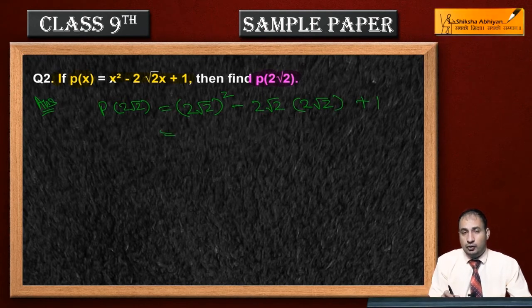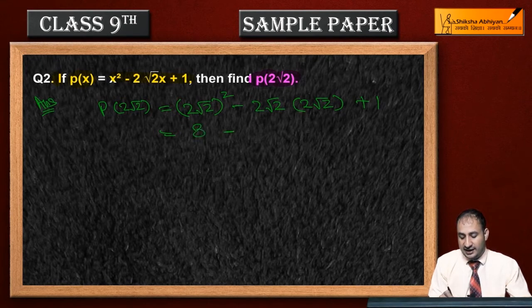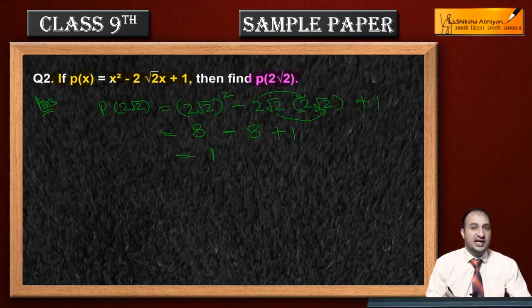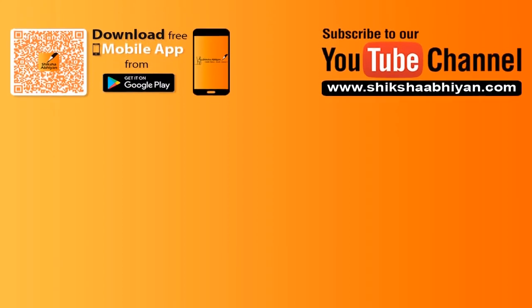अब 2 का square 4 आ जाएगा, root 2 का square 2, और 4 times 2 is 8 आ जाएगा. यहां पर minus, again यहां पर देखिए 2 की 2 में multiply होगी 4, root 2 की root 2 में multiply होगी 2, 4 times 2 is 8 यहां पर आएगा and then plus 1. 8 minus 8 plus 1 जो हो जाएगा 1 आ जाएगा, जो आपका final answer होगा.